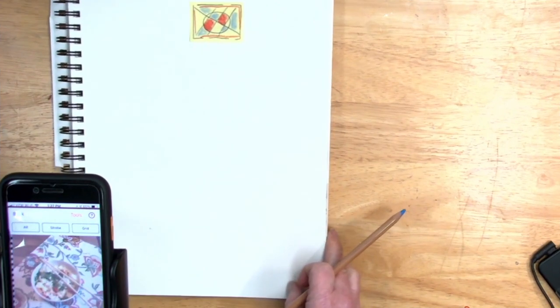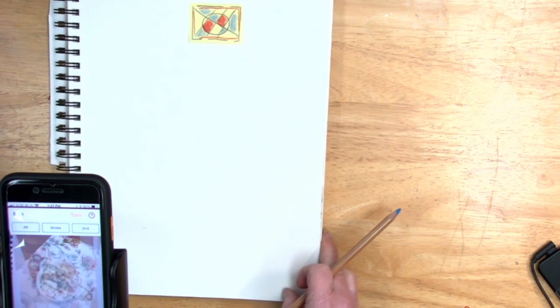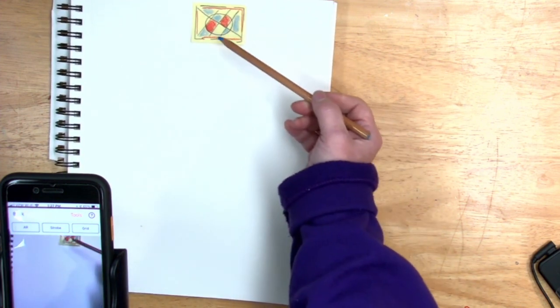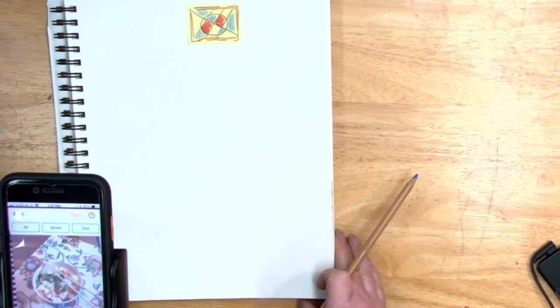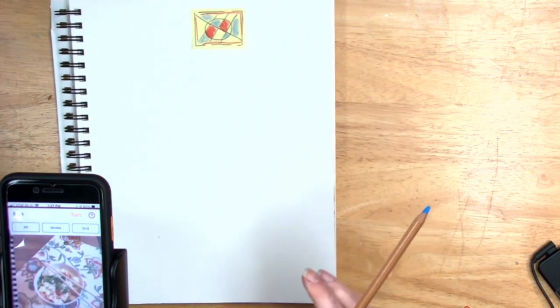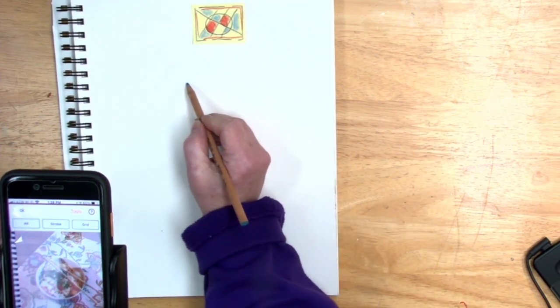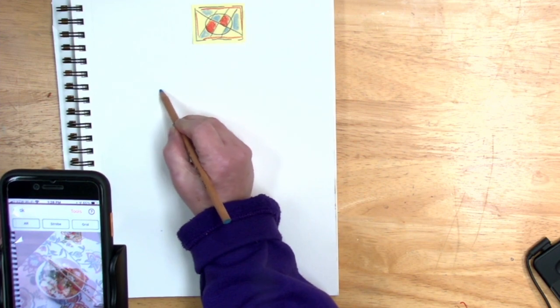Sometimes when you move your tablet or your paper, your picture will do weird things. And that's because of your anchor being moved out of the angle that the phone expects it to be in. I am looking at this and going, how big is this bowl?